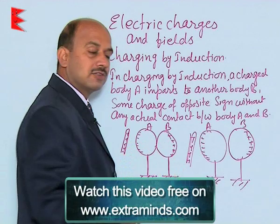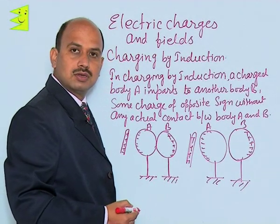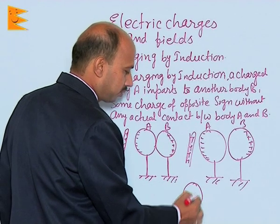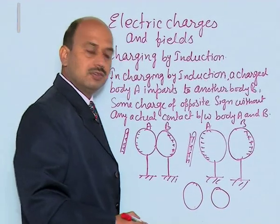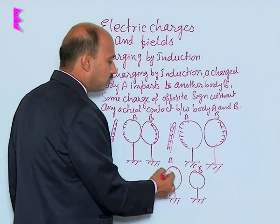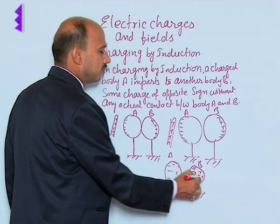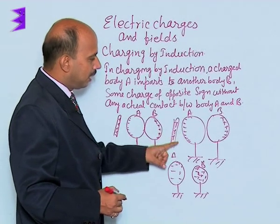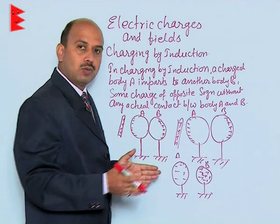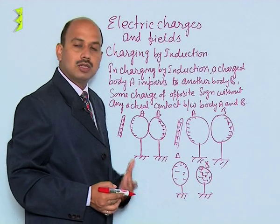In the next step, these spheres are widely separated to far distances and the rod is removed. When they are separated to far distances, you will see that all the negative charges are distributed on sphere A and the positive charges come on body B. So in the second step they were separated slightly, then the rod is removed and they are widely separated — all negatives redistribute on metallic sphere A and all positives redistribute on metallic sphere B.